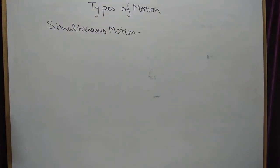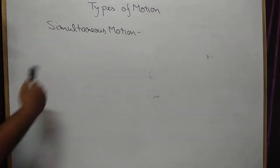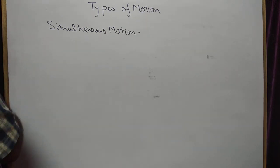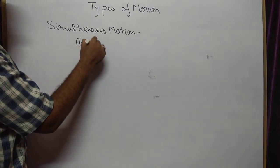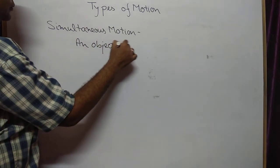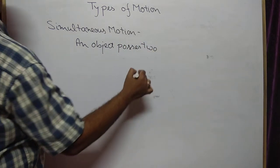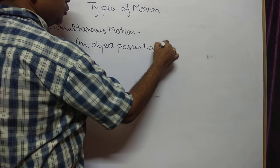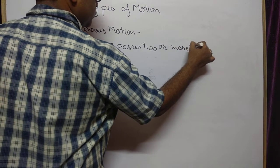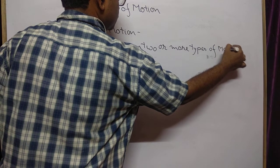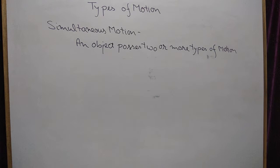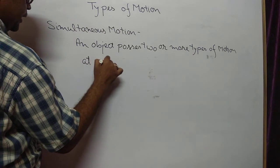Simultaneous motion — what is this type of motion? Remember that simultaneous means someone doing two types of work at the same time. So when an object possesses two or more types of motion at the same time, this is known as simultaneous motion.